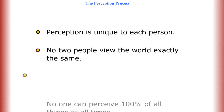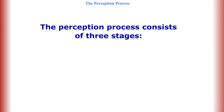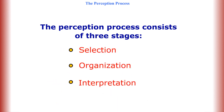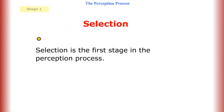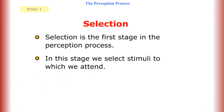Perception is unique to each person. No two people view the world exactly the same, and no one can perceive 100% of all things at all times. The perception process consists of three stages: selection, organization, and interpretation.